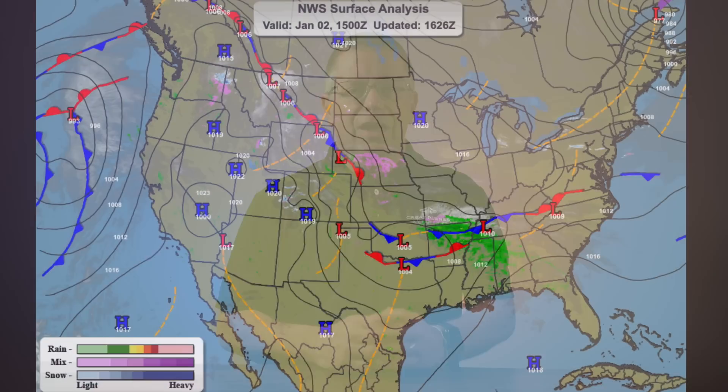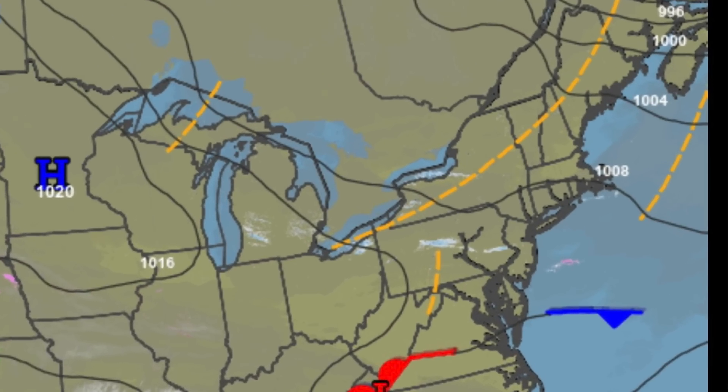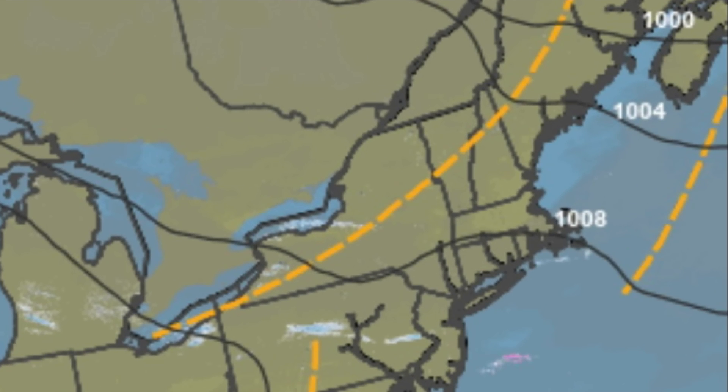When you see a low on the chart, be suspicious. In addition to the highs and lows, you should also be on the lookout for troughs. These yellow dashed lines on the chart indicate elongated areas of low pressure extending from a low pressure system. Because lows indicate rising air, these troughs can also lead to bad weather.